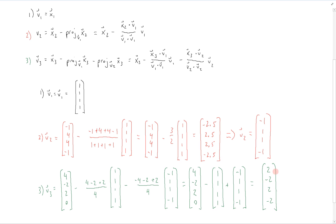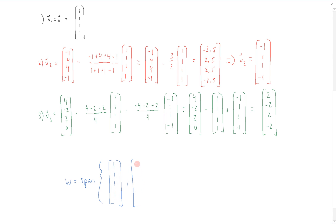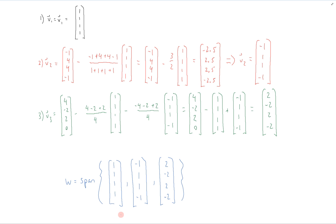At this point we could scale this by 2 to get (1, -1, 1, -1), but it doesn't actually matter because we're done. We wanted to find an orthogonal basis, and all that matters is the directions, not the magnitudes. Therefore, W can also be written as the span of these three vectors: (1, 1, 1, 1), (-1, 1, 1, -1), and (2, -2, 2, -2). The dot product of each pair is zero, confirming this is an orthogonal basis. Optionally, each vector could be scaled by its magnitude to get an orthonormal basis, but for an orthogonal basis, this is all we need.